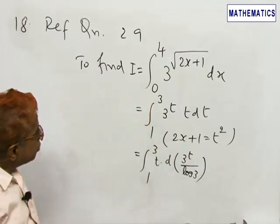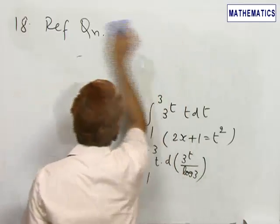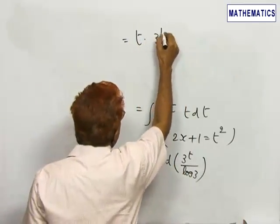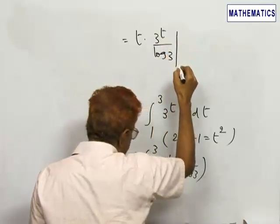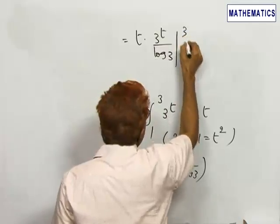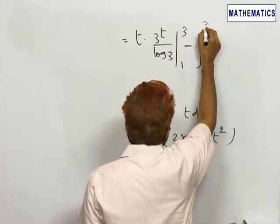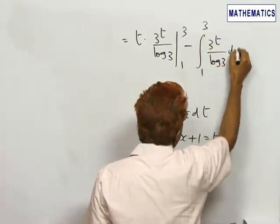By using the formula for integration by parts, this is equal to t into 3 power t by log 3 between the limits 1 to 3 minus the integral 1 to 3 of 3 power t by log 3 dt.